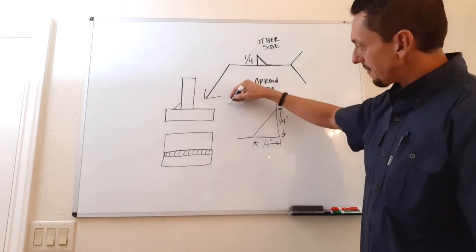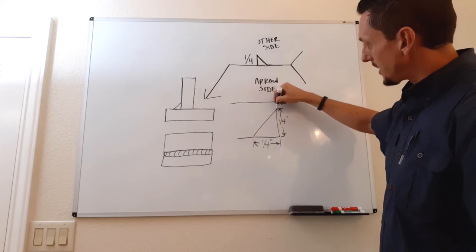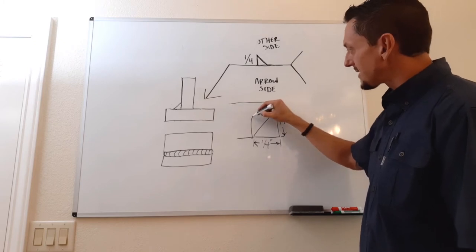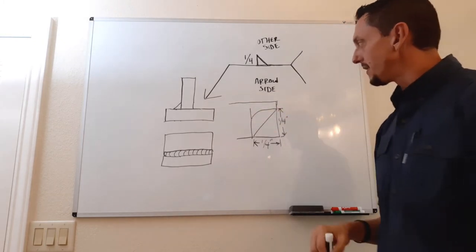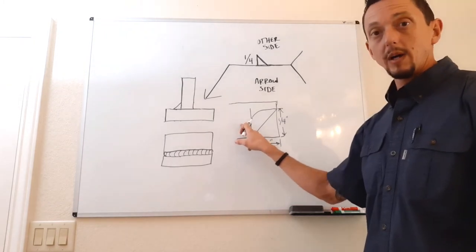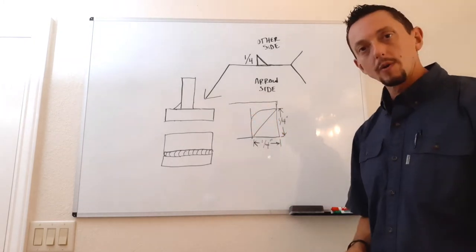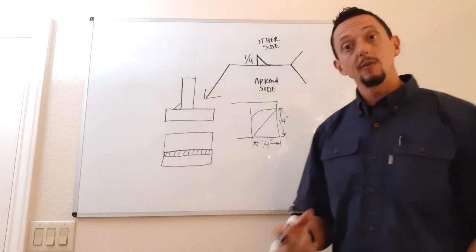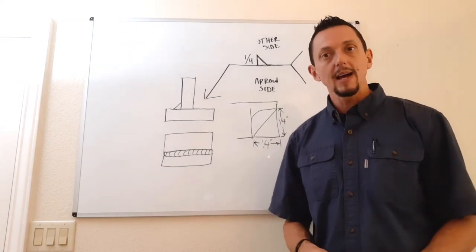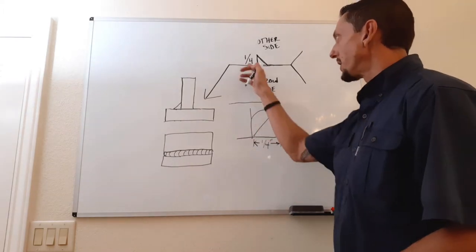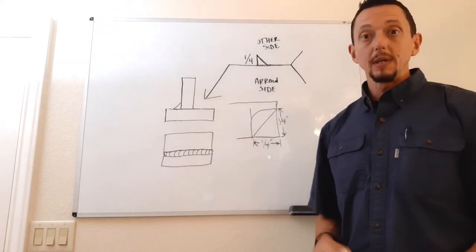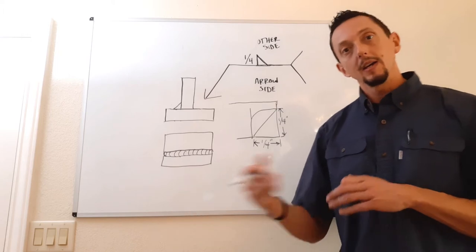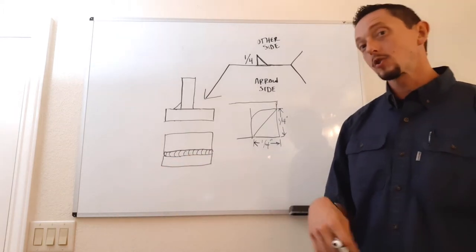A fillet weld gauge is a piece of metal that you butt up against the base material. It will have lines marking the distance the weld is supposed to be. If it's a quarter inch fillet weld gauge, it'll have a line at the quarter inch mark, and you'll want to make sure your toe at least lines up or goes over that line for an acceptable weld. Equal leg lengths is the standard.